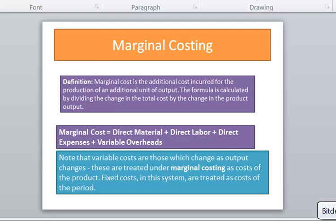Fixed costs, in contrast, are costs that remain unchanged in total for a period, regardless of the volume of production and sales. Note that variable costs, those which change as output changes, are treated under marginal costing as costs of the product. Fixed costs in this system are treated as costs of the period.